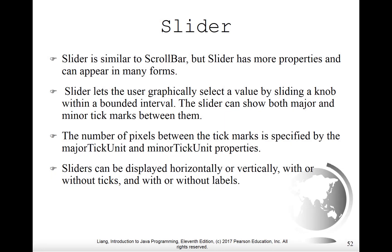The next user interface control we'll look at is the slider. The slider is basically a fancy version of a scroll bar — it has more properties. For example, we can show major and minor tick marks showing different positions of the slider, and the slider has a knob that we can drag around within the track. We have the ability to define how many pixels there will be between tick marks, and we can put labels on those tick marks as well.